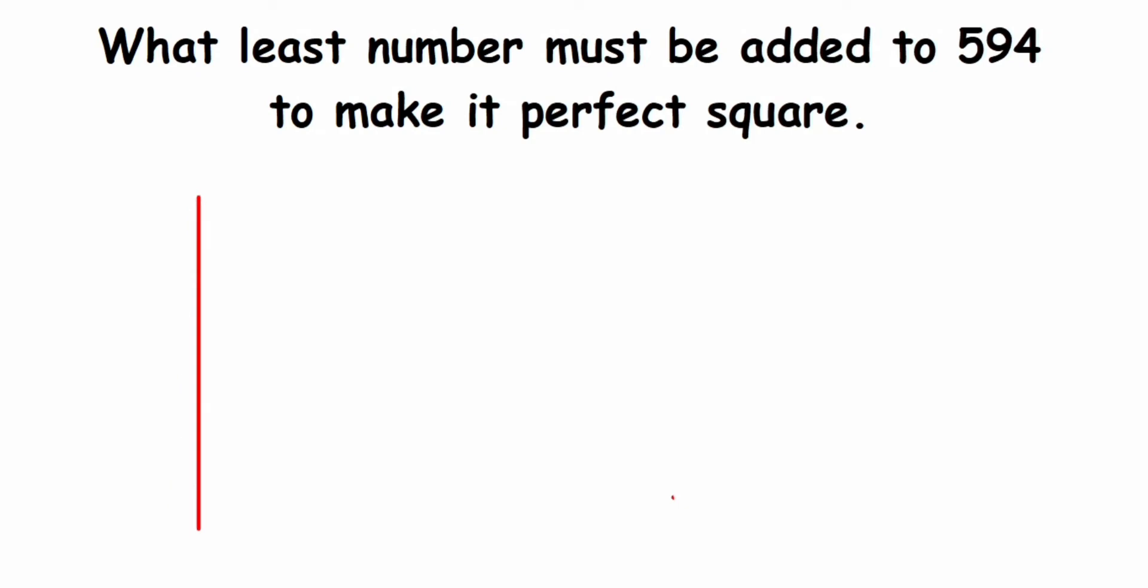In this method, you have to start pairing up from the right side. This means 94 will be one pair, and 5, since it's a single number left, that will be one pair.